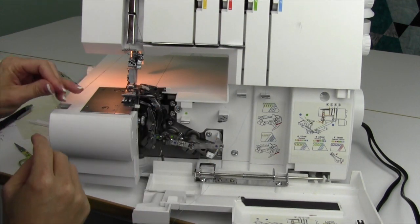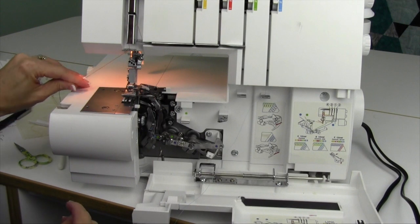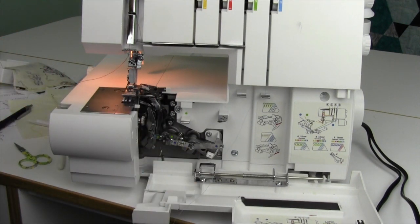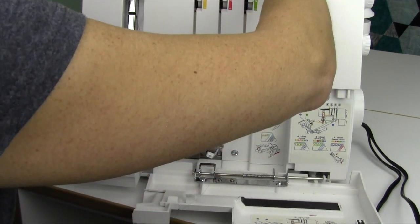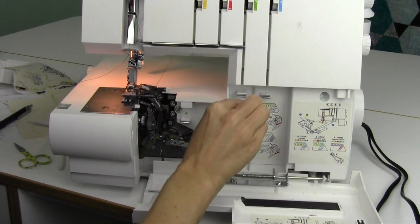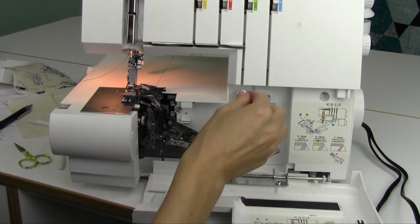Now I'm going to go ahead and re-thread the machine. I do have the needles technically threaded, so I'm going to leave those off to the side. Remember that order we started off with? We do need to thread the upper looper first, then the lower looper, and then needles go in last.